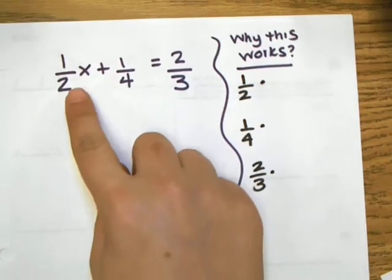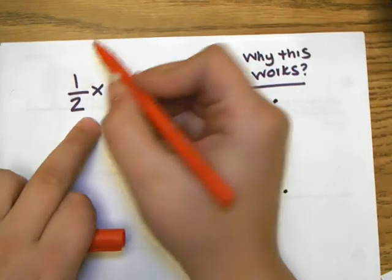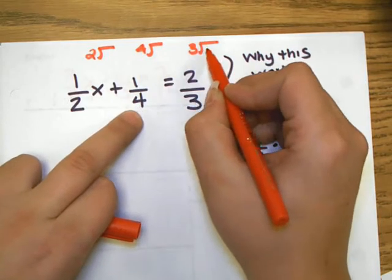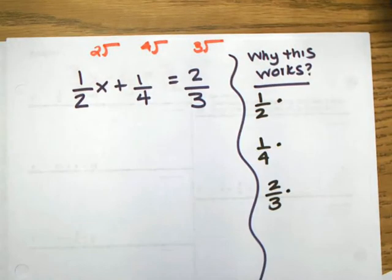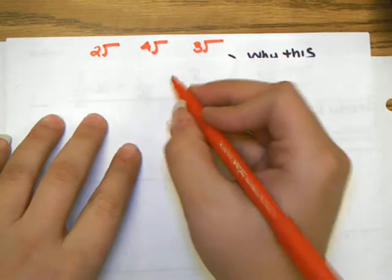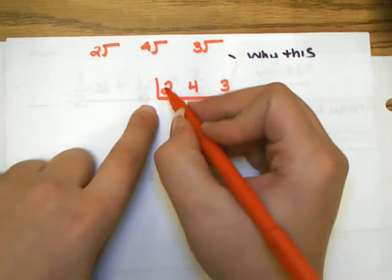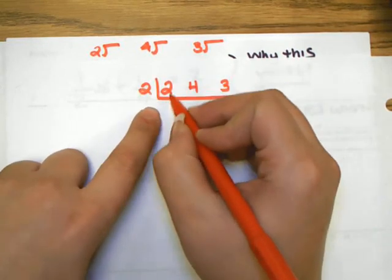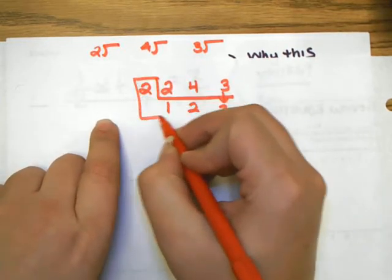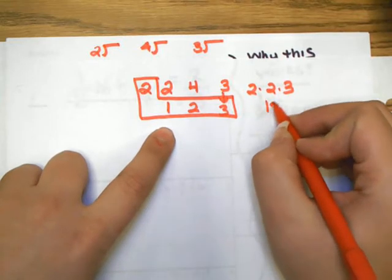The first step is to look at the denominators. You are going to find what number can 2, 4, and 3 go into. What common multiple do they all share? If you're not sure, you can always use the LCM method from chapter 4. So 2 goes into 2 once, 2 goes into 4 twice, bring down the 3, and then make an L. That tells us our LCM is 12.